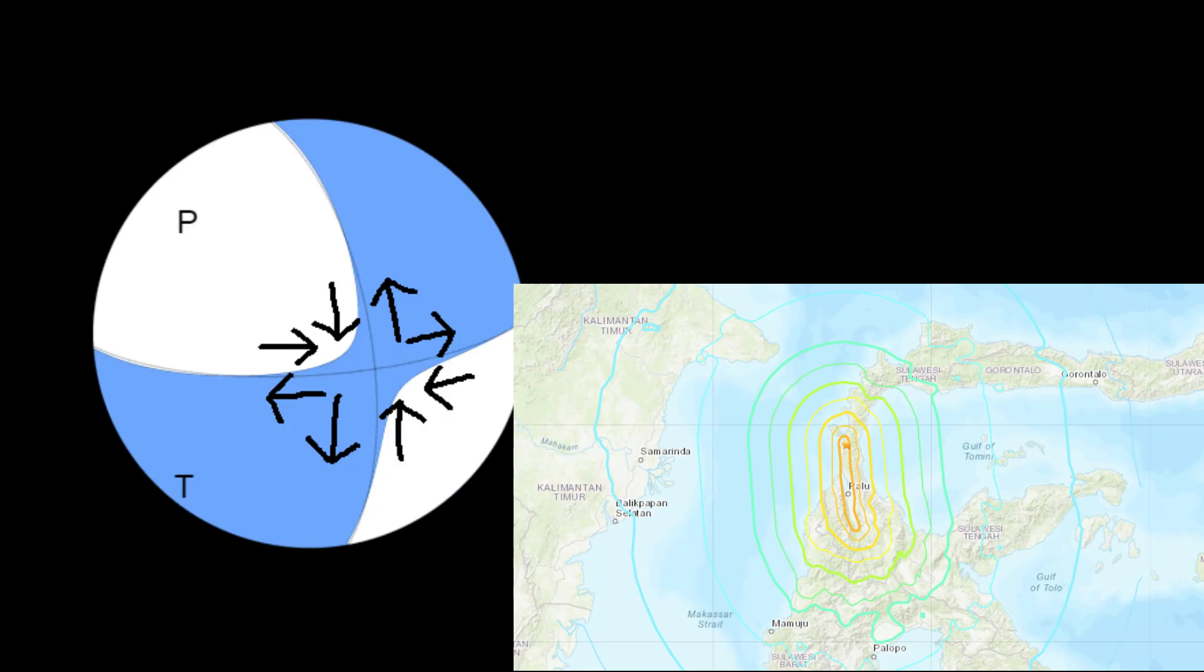Take the 2018 Palu earthquake. Just by looking at the shape map, we can already tell that the fault responsible is the one heading north-south.